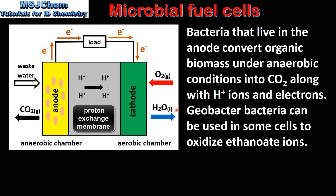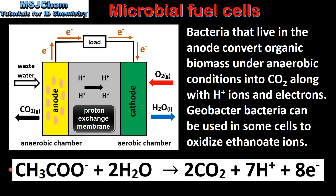Possible fuel sources include carbohydrates or substrates present in waste water. For example, geobacter bacteria can be used in some cells to oxidize ethanoate ions. Here we have the equation for the oxidation of ethanoate ions to produce carbon dioxide, hydrogen ions and electrons. The electrons flow in the external circuit to produce an electric current.